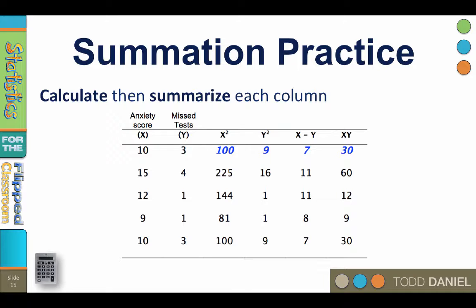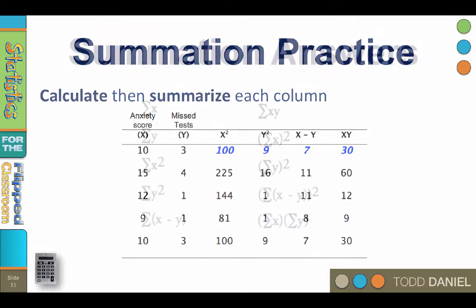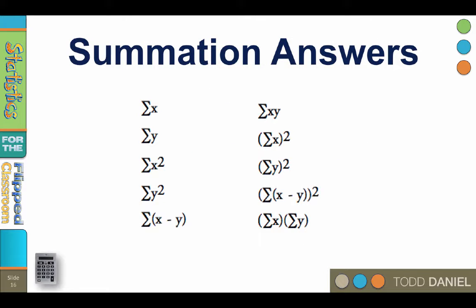Our next step will be to summarize or add up each column. Here I'm going to use some notation so that you can become familiar with it. The first value that we are going to create is the sum of x. This means you add up all the numbers in the x column. 10 plus 15 plus 12 plus 9 plus 10 equals 56. That is the sum of x.